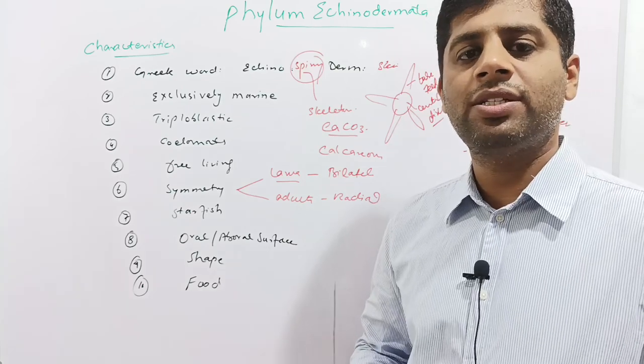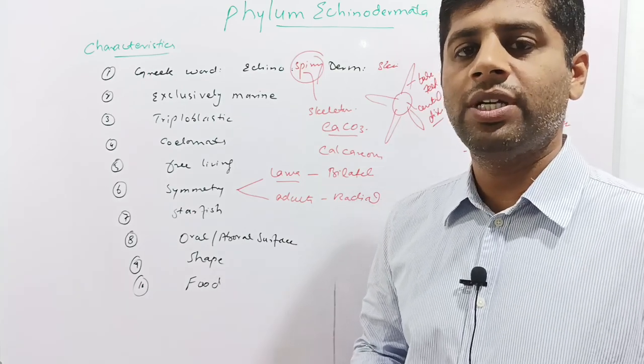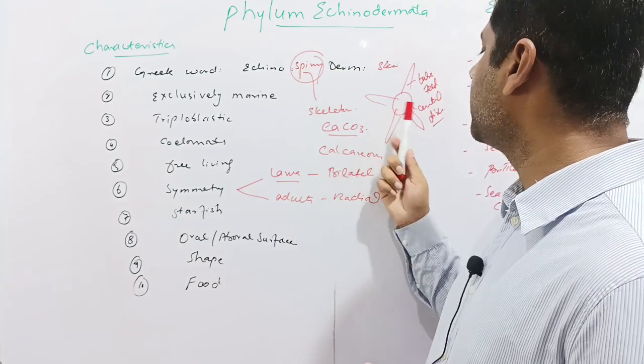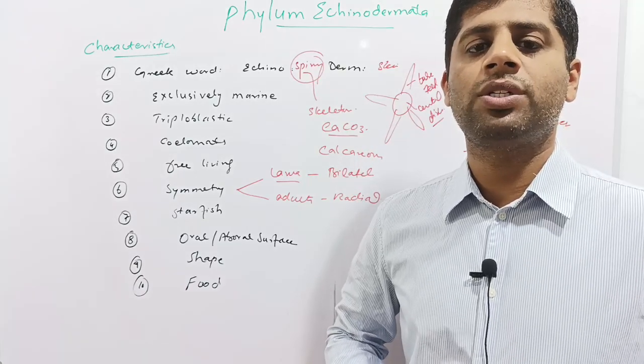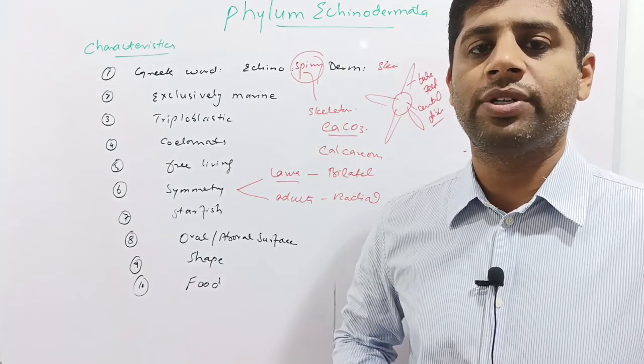Echinoderms have a remarkable power of regeneration. For example, a small fragment of the tube feet of a starfish along with a small fragment of the central disc is capable of constituting the whole entire organism — the starfish.